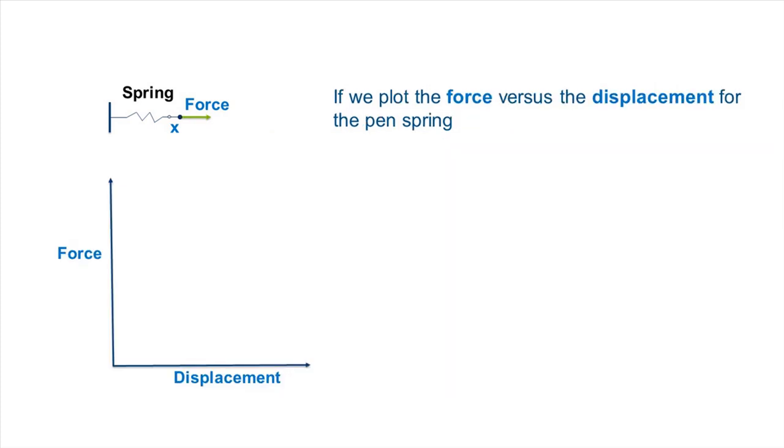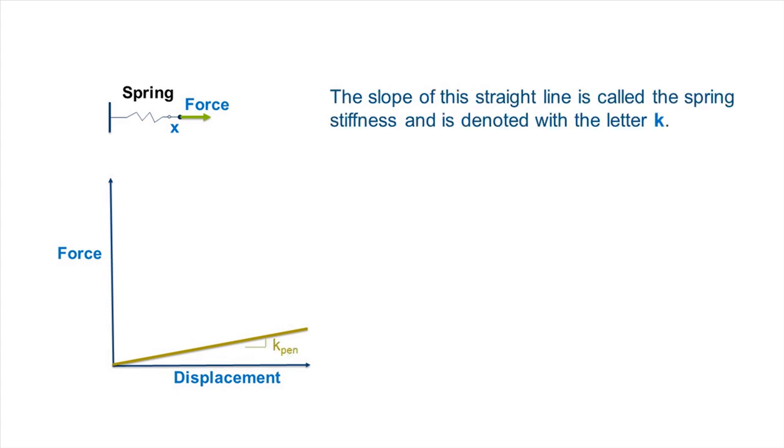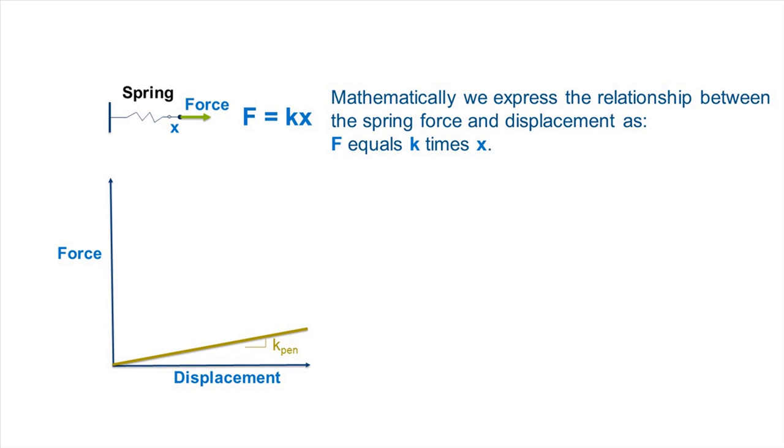If we plot the force versus the displacement for the pen spring, we get a straight line. The slope of this straight line is called the spring stiffness and is denoted with the letter K. Mathematically, we express the relationship between the spring force and the displacement as F = kx.